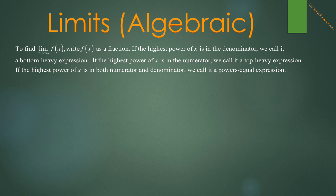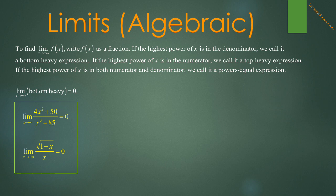To find the limit of f of x as x approaches infinity or negative infinity, we first write f of x as a fraction. If the highest power of x is in the denominator, it is a bottom-heavy expression; limits of bottom-heavy expressions as x approaches plus or minus infinity are always 0. For example, the limit as x approaches infinity of 4x squared plus 50 over x cubed minus 85 is 0. Similarly, the limit as x approaches negative infinity of the square root of 1 minus x over x equals 0, since x has power 1 in the denominator and power one half in the numerator.